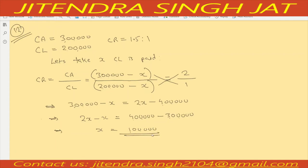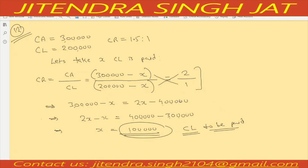So x equals 1,00,000 — that much current liability is to be paid to maintain the ratio of 2 is to 1.